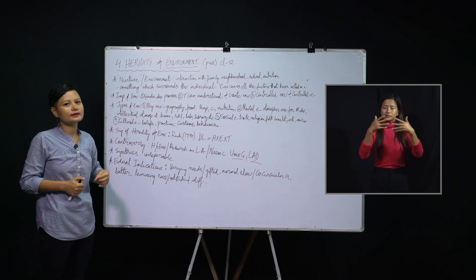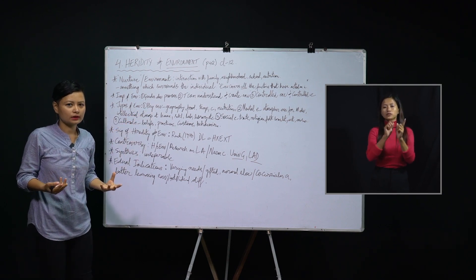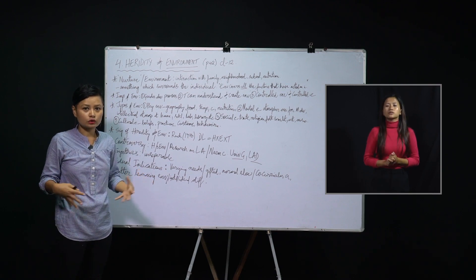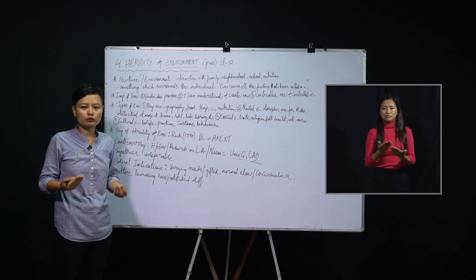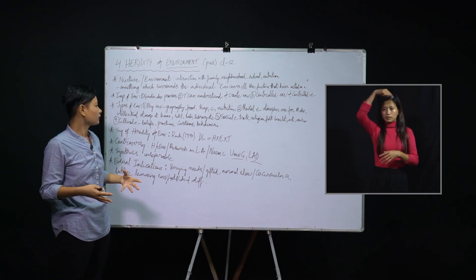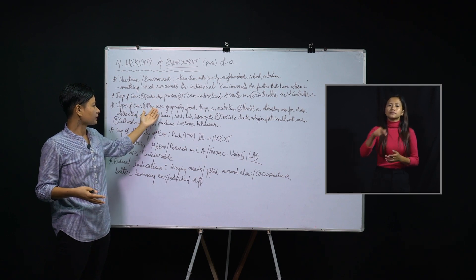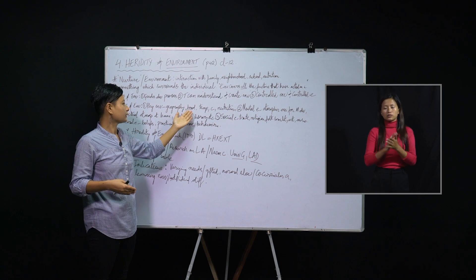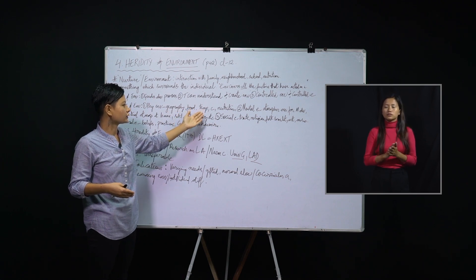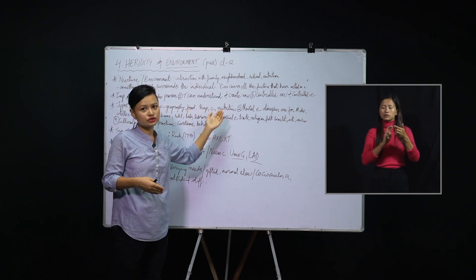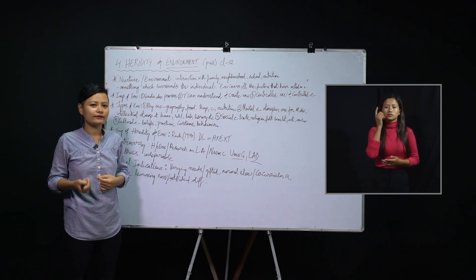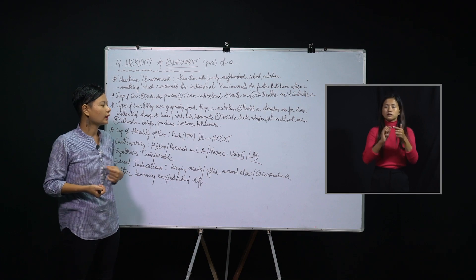The first type of environment is the physical environment, which relates to the geography around us — the atmosphere, weather conditions, food, temperature, and nutrition. All of these can be understood as part of the physical environment.